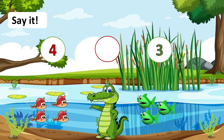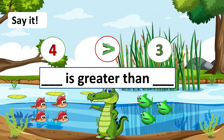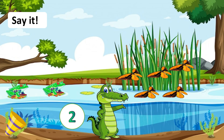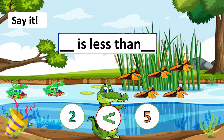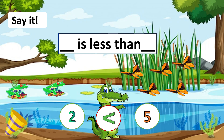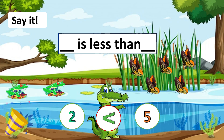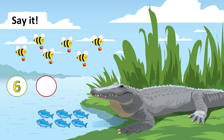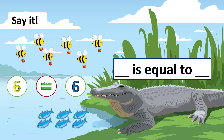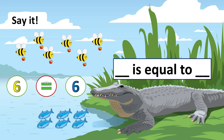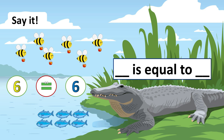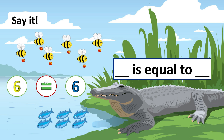Let's say it: four is greater than three. Can you say it aloud? Great job! Two is less than five. Can you say it aloud? Two is less than five. Great job! How about this one? We say six is equal to six. Can you say it aloud? Six is equal to six. You did a great job!